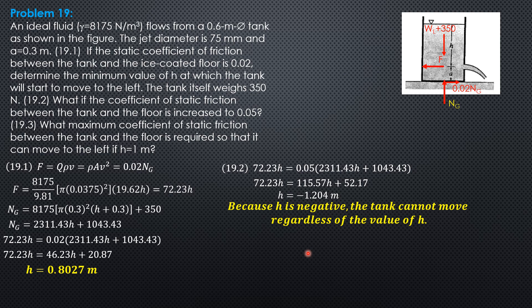Then what maximum coefficient of static friction between the tank and the floor is required so that it can move to the left? So F should be greater than coefficient of static friction times NG. So F is 72.23H times 1, H is 1, 72.23 N.